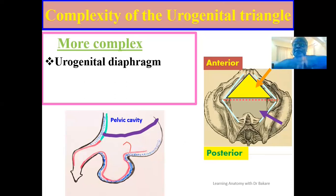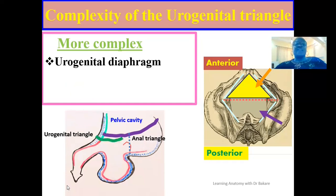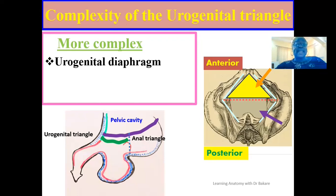Inferior to the pelvic floor or pelvic diaphragm is where we have the perineum — the space created inferior to the pelvic floor. This perineum is further subdivided into two triangles by a line of demarcation, which is an imaginary line running from one ischial tuberosity to the other. Within the urogenital triangle at the front is where we have the urogenital diaphragm. This urogenital diaphragm is limited to just the urogenital triangle — it does not extend to the anal triangle, and this is one of the bases behind the complexity of the urogenital triangle.